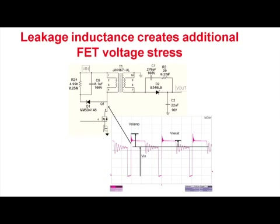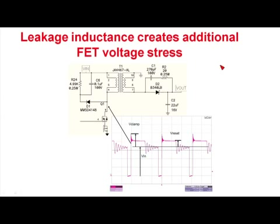Here's a simplified schematic of a flyback converter. The power supply operates with a coupled inductor transformer. It operates by turning the power FET on into the primary, it builds up energy in the transformer inductance, and then the power FET turns off. The voltage on the FET rises, and as it rises, it rises on the secondary also. And it gets to the point that the voltage on the transformer equals the output voltage, and then the diode starts to conduct in the secondary.